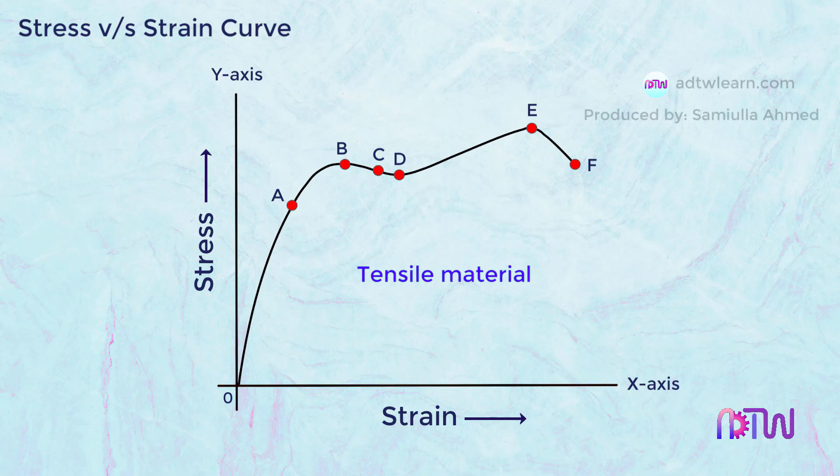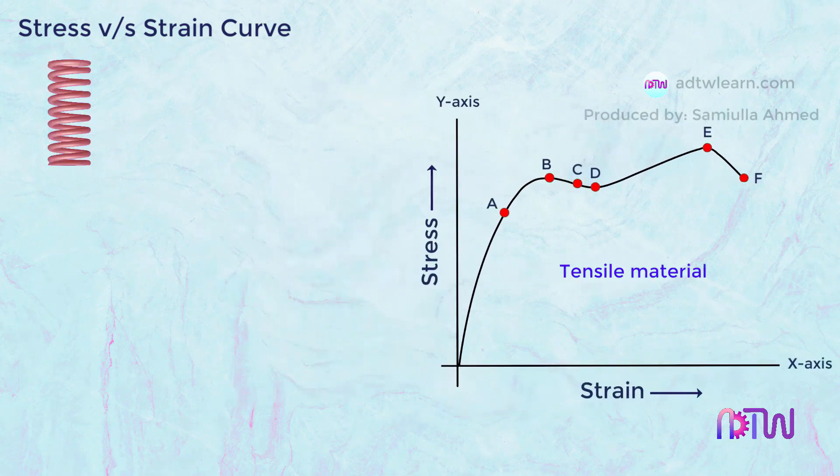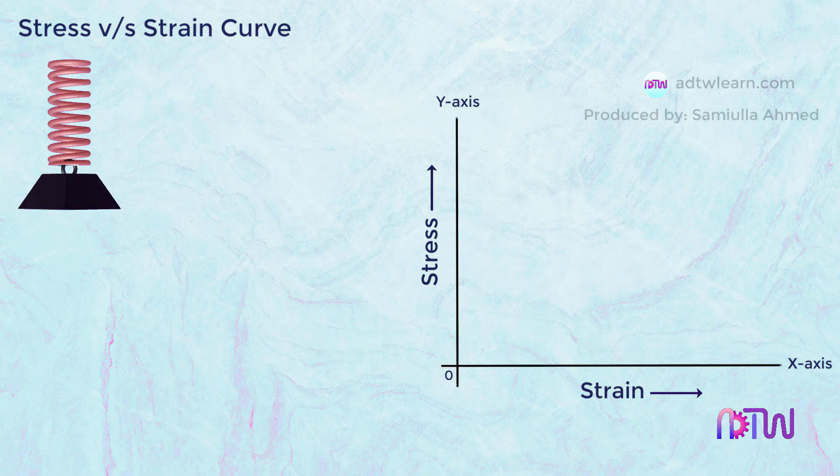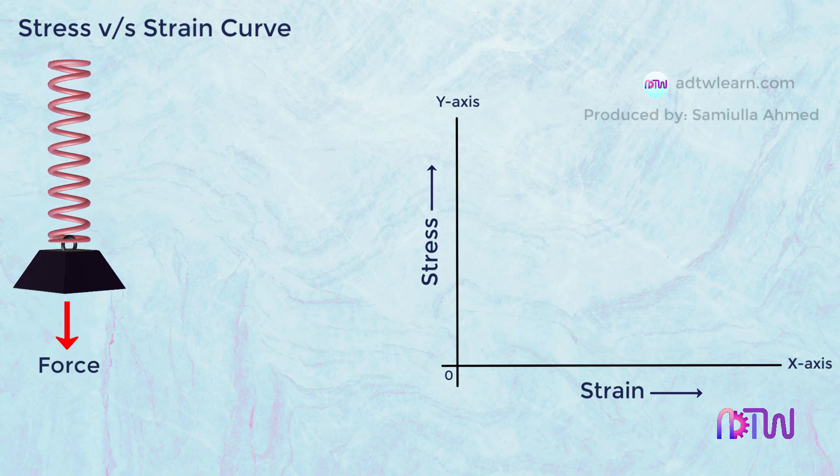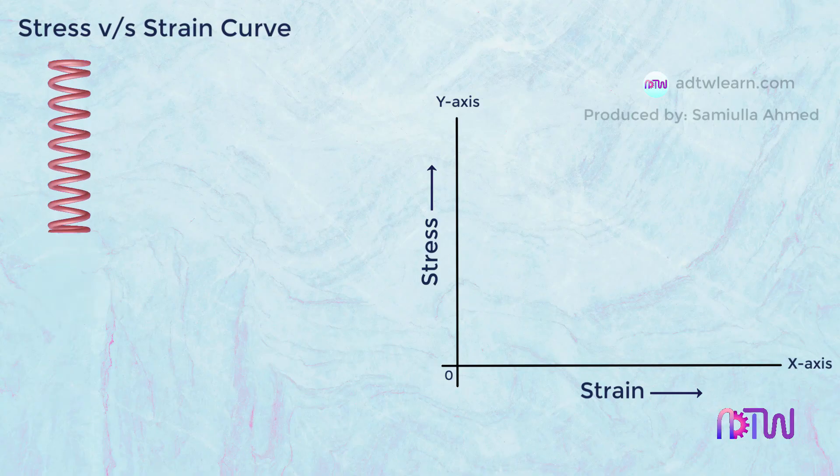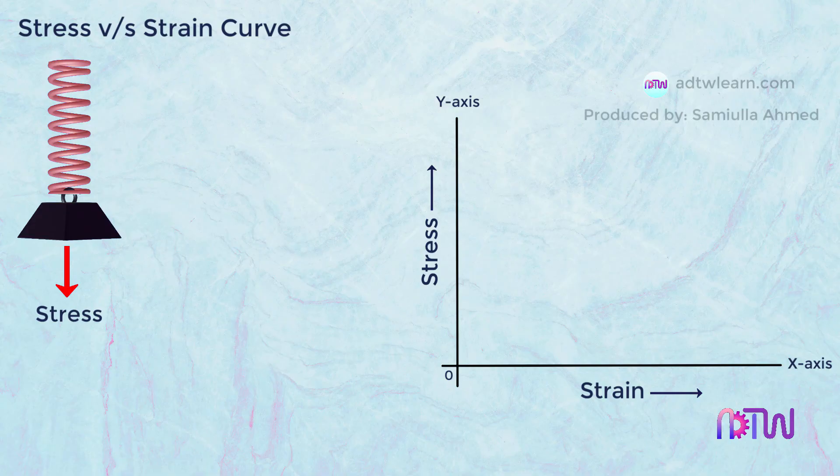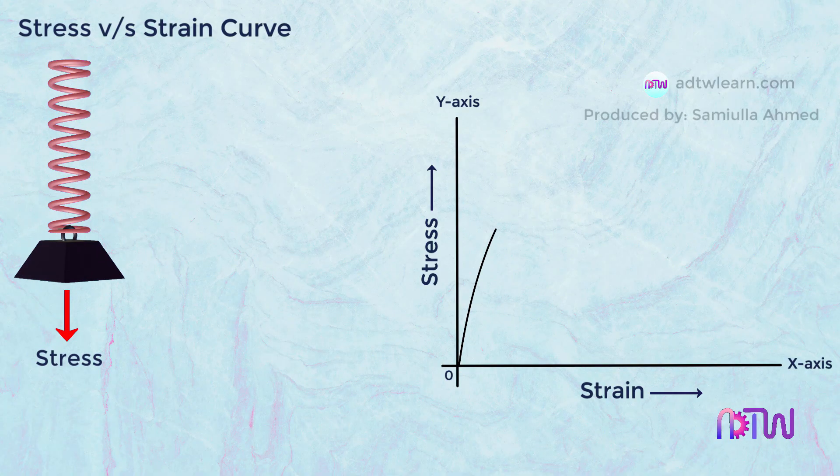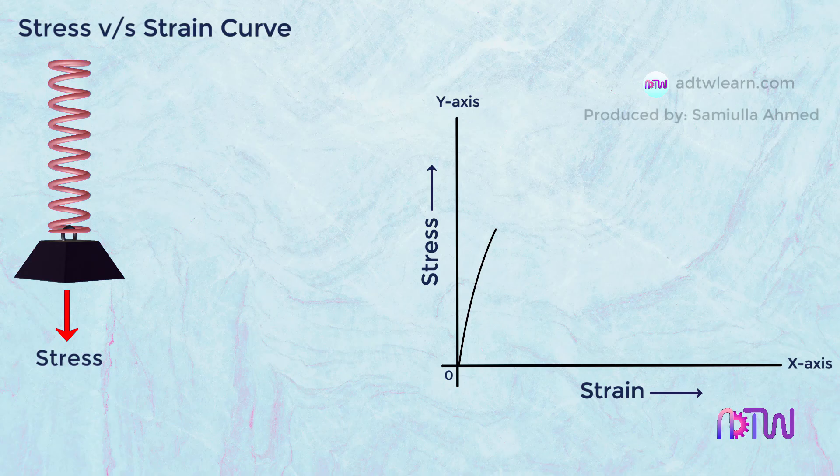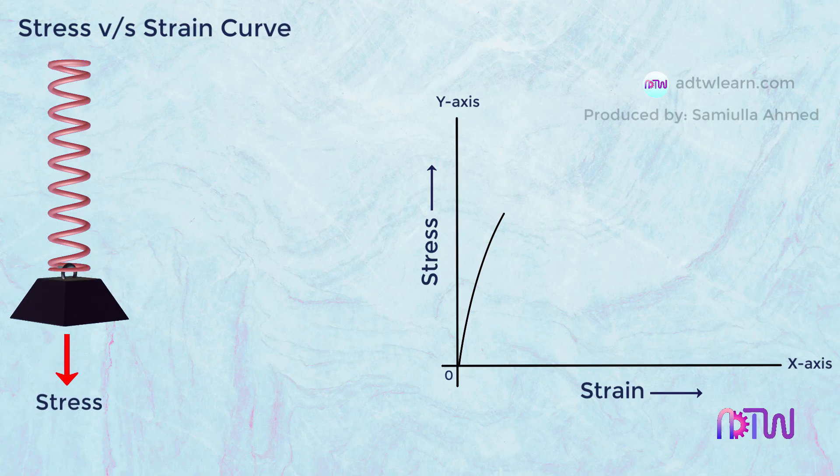To understand this we will take a tensile material. When we load this material, that means we are applying force on it. When applying a force it undergoes elongation. In other words, when we apply stress on this spring, it undergoes strain. Now we plot these stress-strain values on y and x-axis. As we increase stress, the body undergoes strain. If we further increase the stress, the body undergoes more strain.